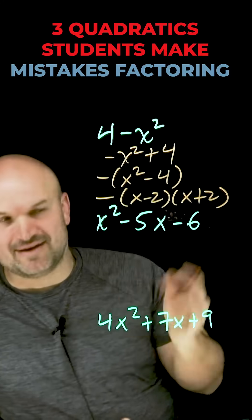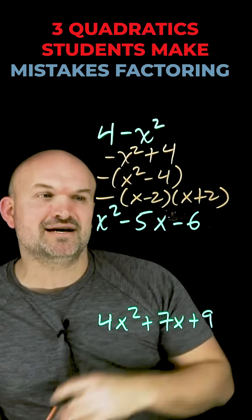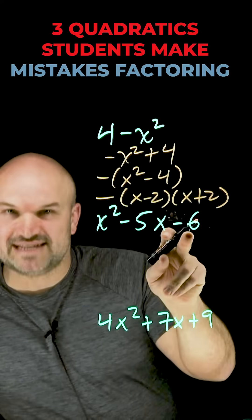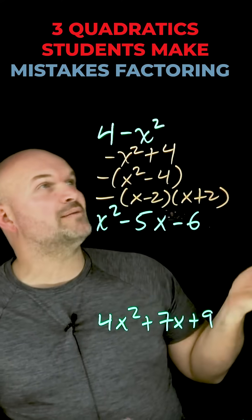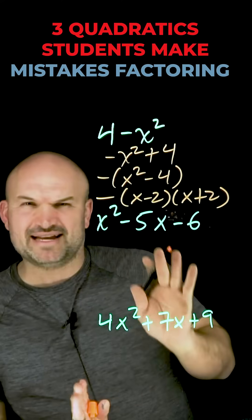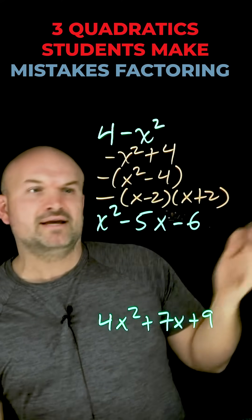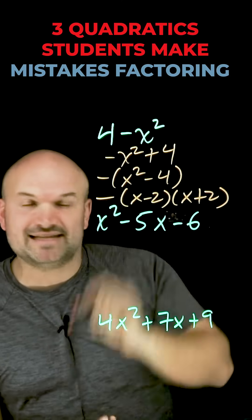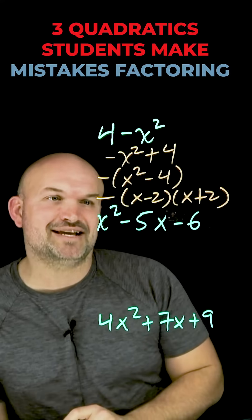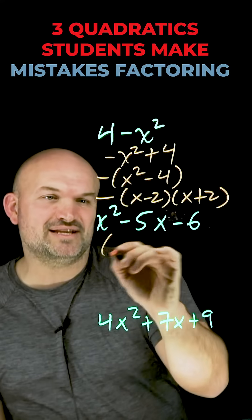The next one is probably the most commonly missed — it almost happens every single time we're dealing with factoring quadratics. Students immediately see the 6, and they say: what two numbers multiply to give me 6? Forgetting about the negatives, they say 2 and 3. Then what two numbers add to give me 5? That's 2 and 3 again.